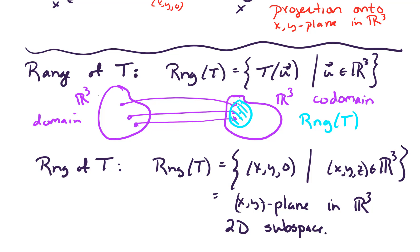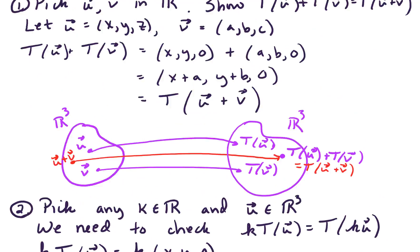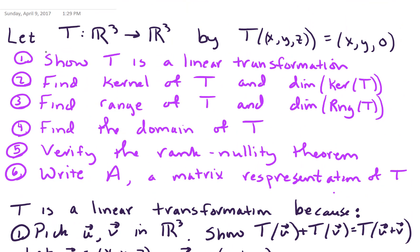So we've answered a lot of the questions we set out to do. We've shown T is a linear transformation, found the kernel and its dimension, found the range and its dimension. The domain of T is just R3 — it's the first set we start with, our input values. Next we want to verify the rank-nullity theorem and write A as a matrix representation of T.